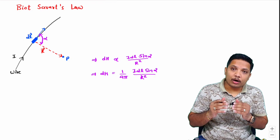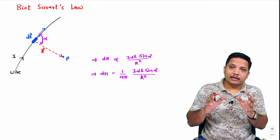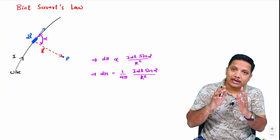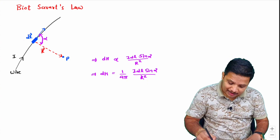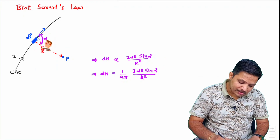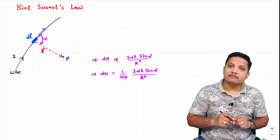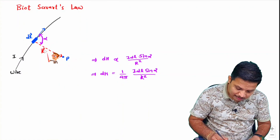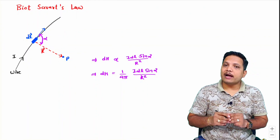Biot-Savart Law states: differential magnetic field DH is directly proportional to differential current length IDL; it is also directly proportional to sine of the angle alpha between differential length DL and position vector R; and it is inversely proportional to the square of the distance R between DL and the point. This is Biot-Savart Law.